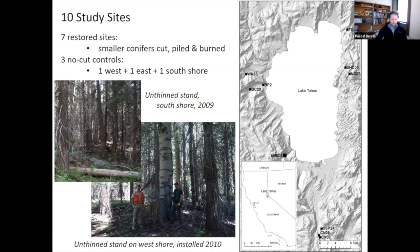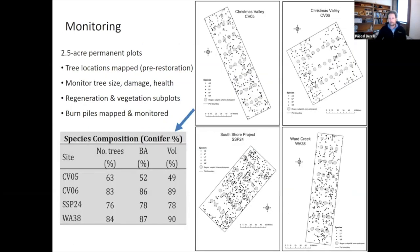These are permanent installations and at each site we're monitoring one hectare — two and a half acre permanent plots. Here are four examples of those sites. We've got tree locations mapped pre-treatment. We're monitoring trees, regeneration, and vegetation in subplots.